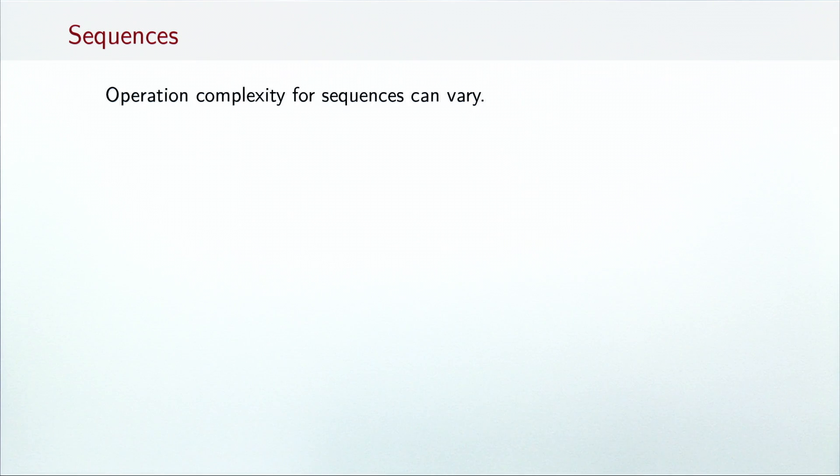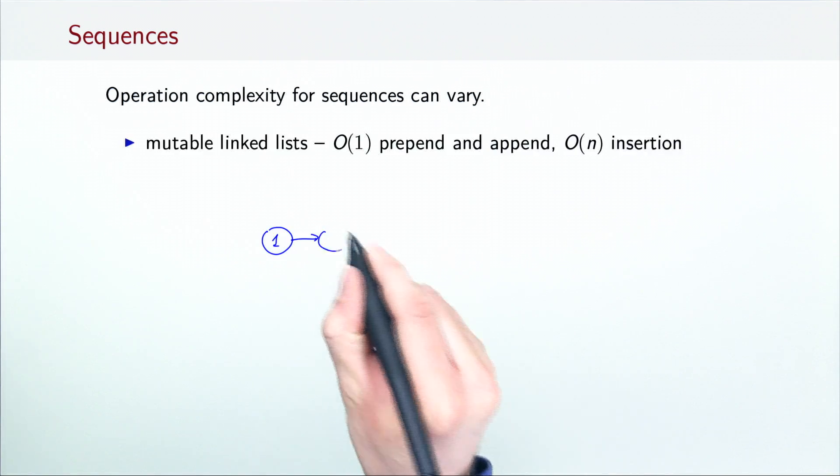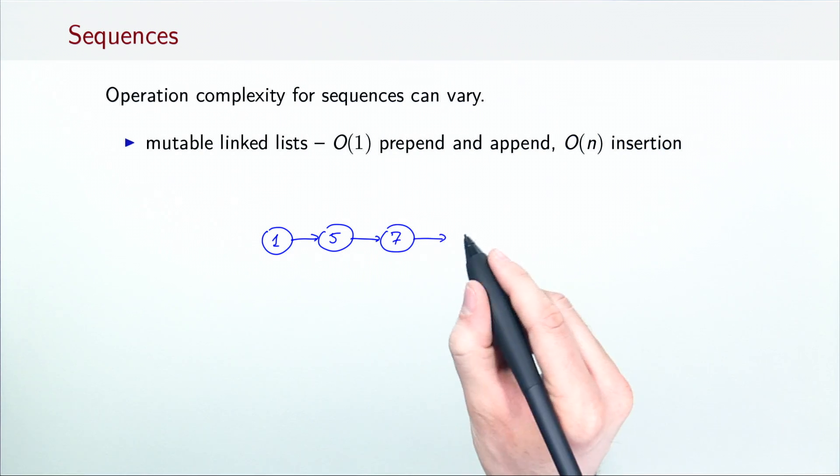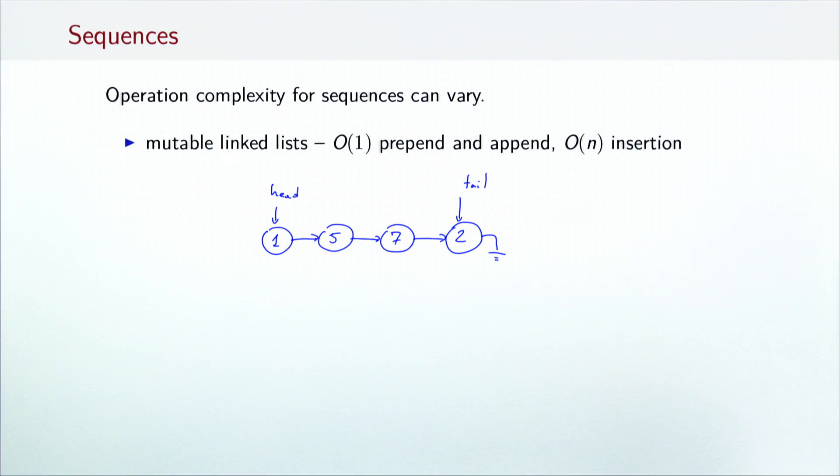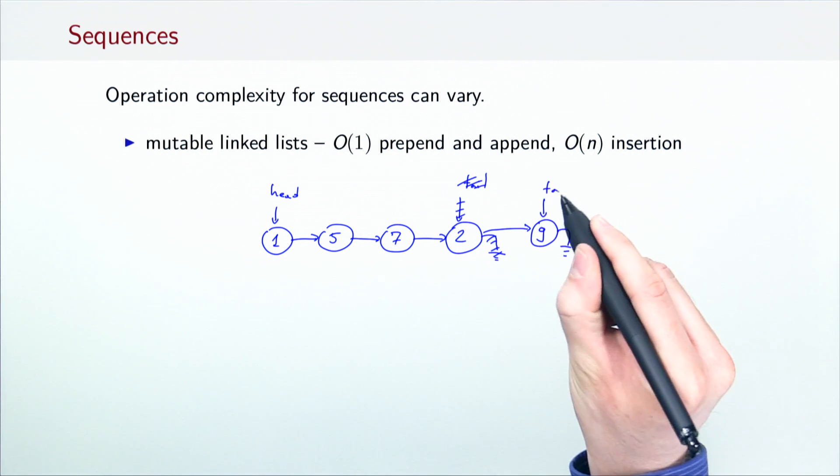Let's next consider data structures that are typically used in programming languages to implement sequences. Here, again, we get various operation complexities. Mutable linked lists have constant time prepend and append operations, but linear time insertion and lookup. So, for example, if we want to append the element 9 at the end of this list, we simply need to update its tail pointer.